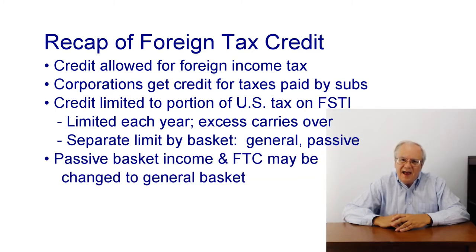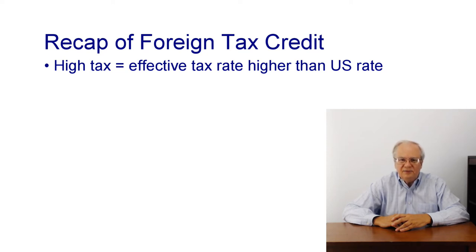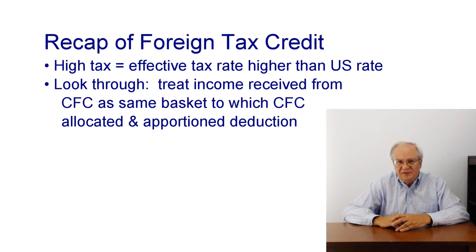Income and taxes in the passive basket may be re-characterized as general basket under either of two rules: the high tax exception and look-through. The high tax rule says income that was subject to foreign income tax at a rate higher than the U.S. rate is treated as general basket — determining the rate is done based on an effective tax rate computed under U.S. concepts. The look-through rule says dividends, interest, rents, and royalties paid by a CFC are looked through — the recipient treats the income as being in the same basket to which the CFC allocated the corresponding expense.